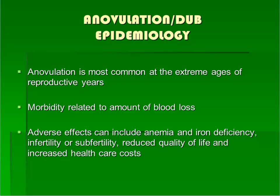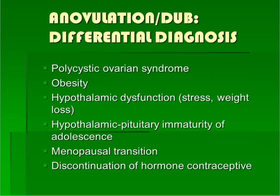Health risks of anovulatory uterine bleeding are related to the amount of blood loss and to the unopposed estrogen exposure. The constant estrogen signal to the endometrium without any progesterone increases a woman's risk of developing uterine cancer. Other adverse effects can include anemia and iron deficiency if bleeding is heavy, infertility because an egg is not being released, reduced quality of life from heavy or unpredictable bleeding, and increased health care costs. Here is a list of possible etiologies for anovulatory uterine bleeding, or DUB.